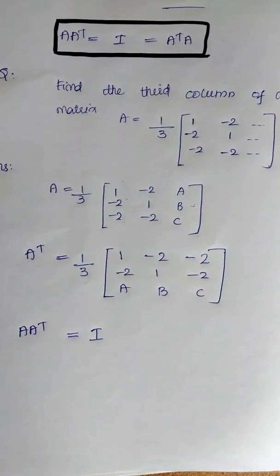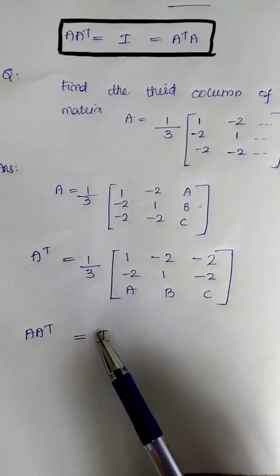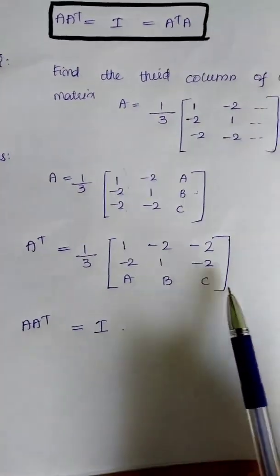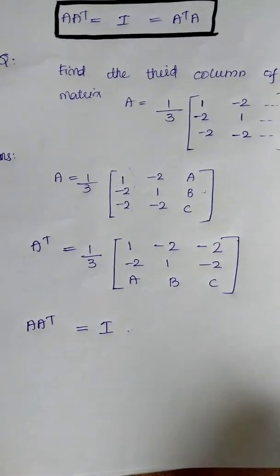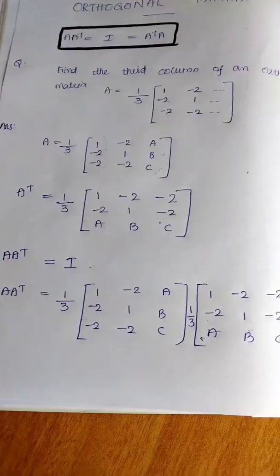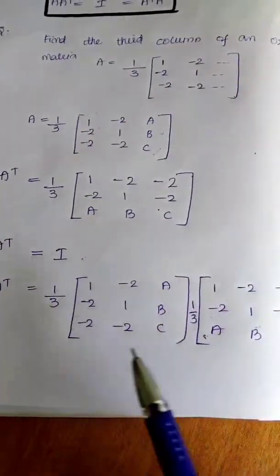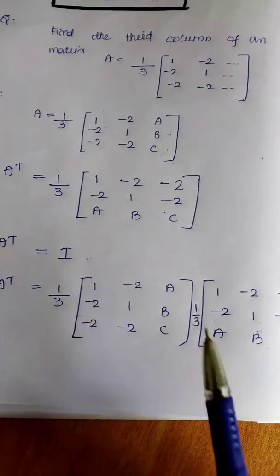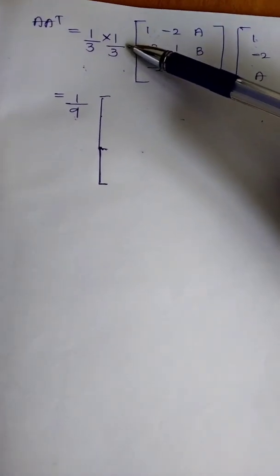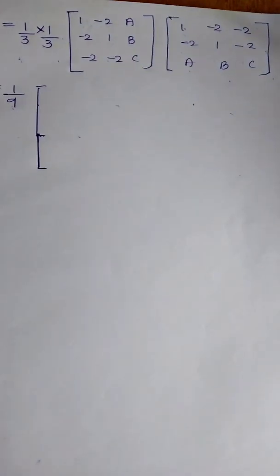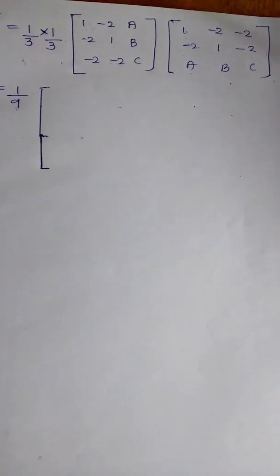The next step is A into A transpose equals I, the identity matrix. We have A, B, C and their values. We have to divide this column. We multiply A into A transpose, multiplying the A transpose and adding the corresponding columns. It is 1 by 3 into 1 by 3, giving us one by 9. I want to write the A transpose and multiply the matrix.